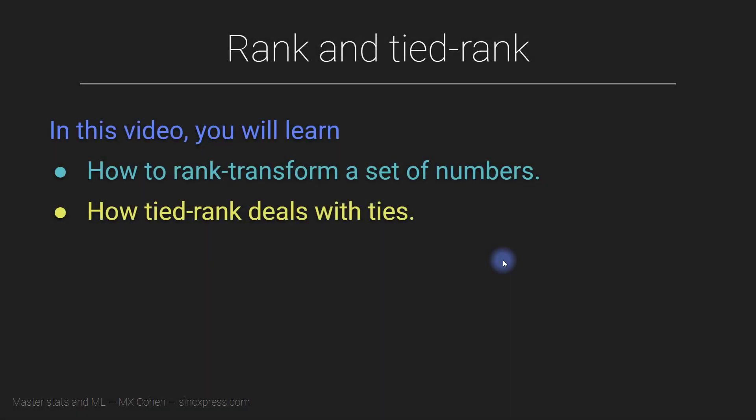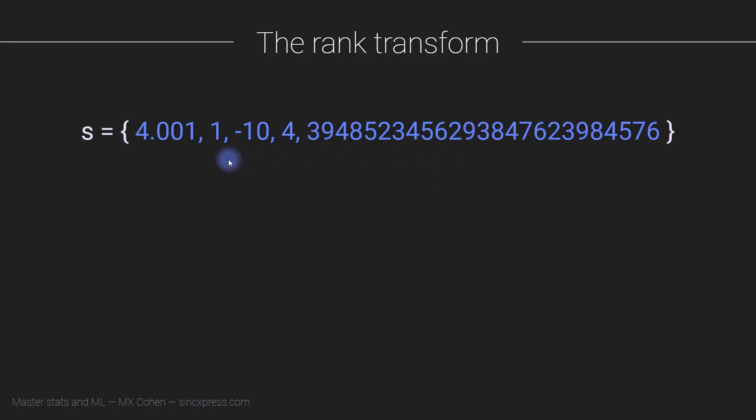Now I'm going to discuss the rank transform and the related tied rank transform. Rank, and in particular tied rank, are really important transformations in statistics. They come up all over the place in correlations, in non-parametric t-tests and ANOVAs. You'll see tied ranks come up quite often in this course and in statistics.